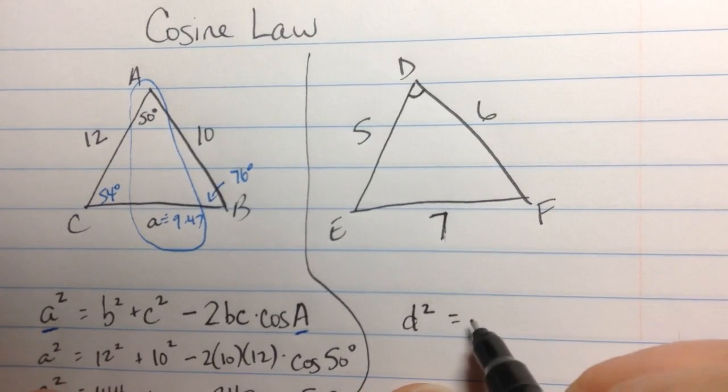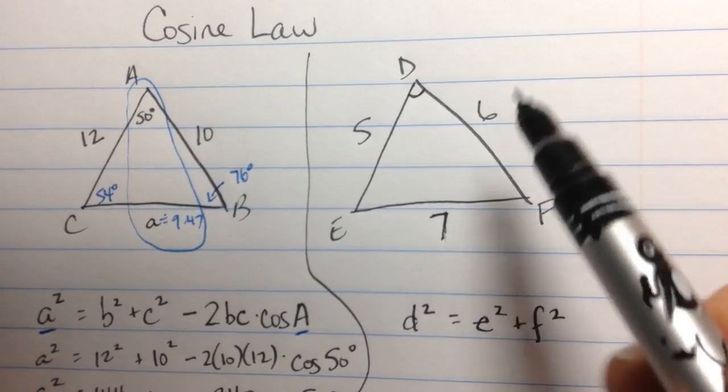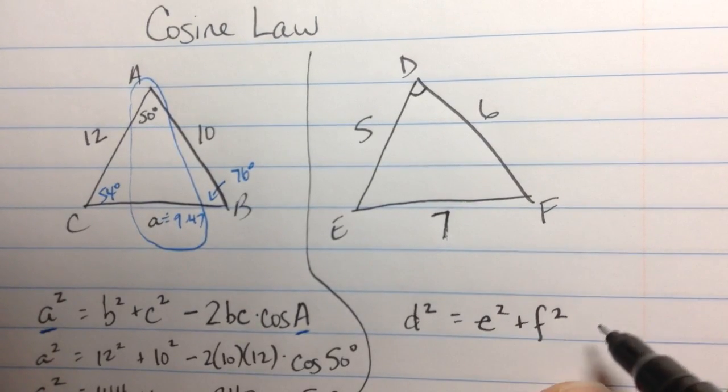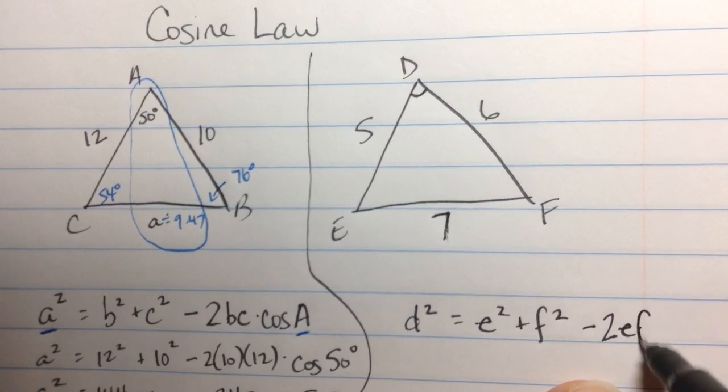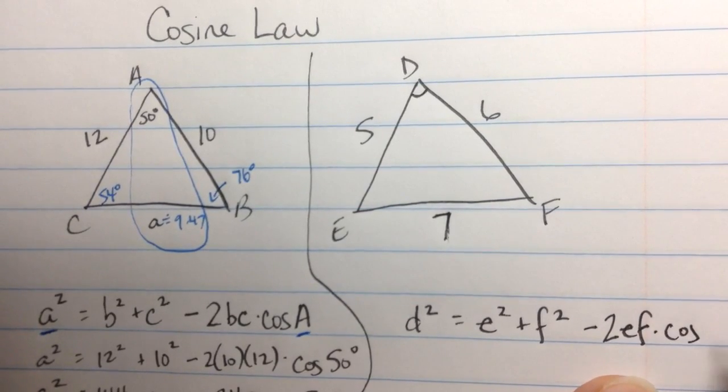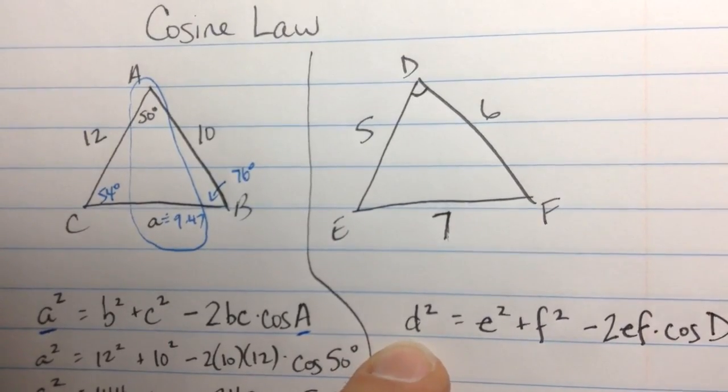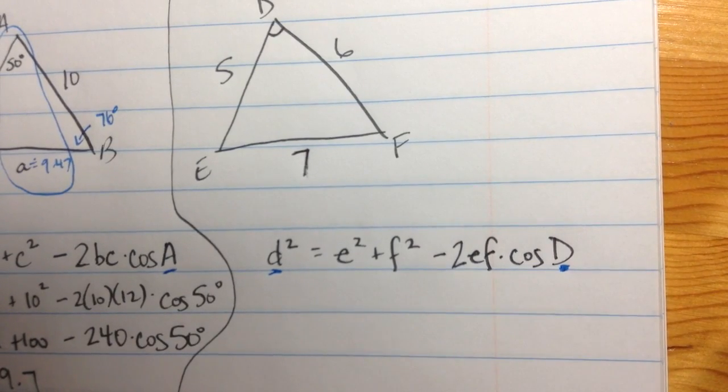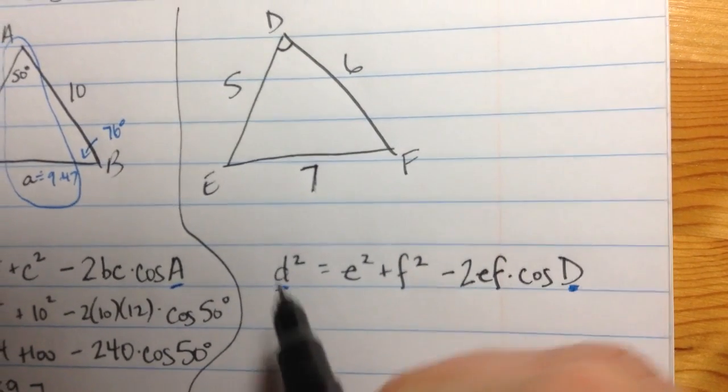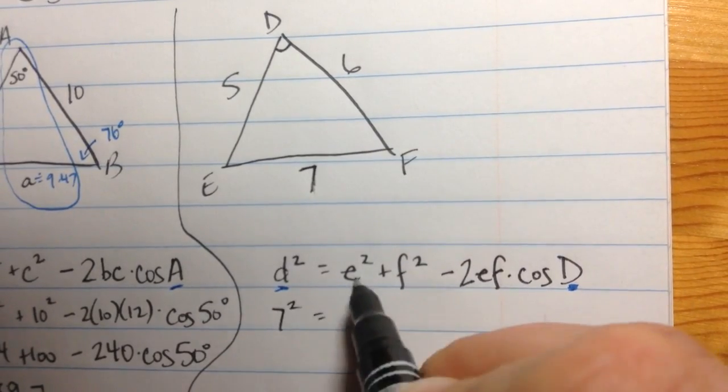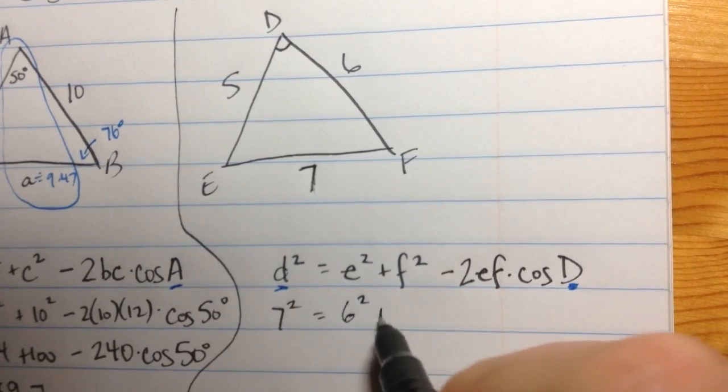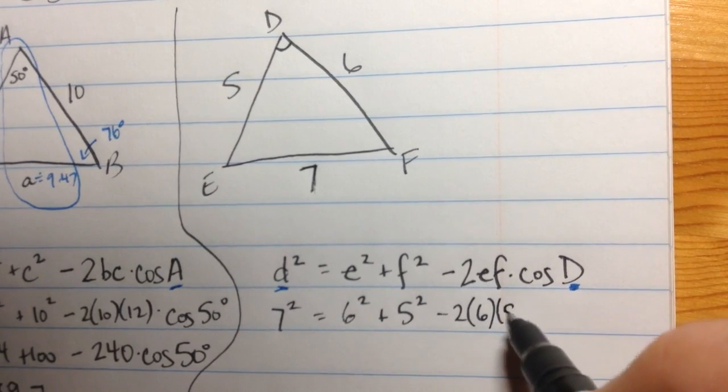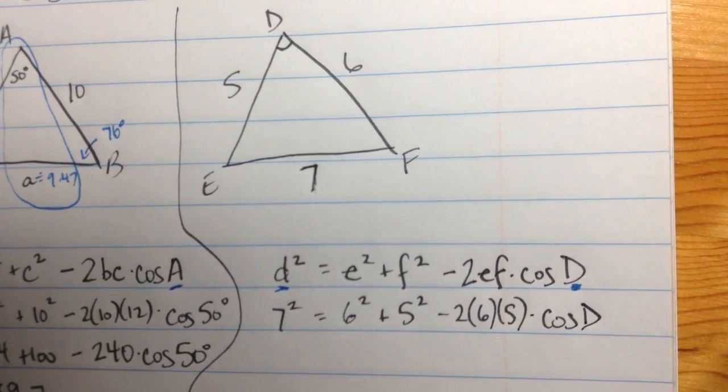So our equation will look like this. d² = e² + f². Those are the two other sides. So that's the 6 and the 5. That looks like Pythagorean Theorem, minus the adjustment 2ef times the cosine of the angle D, the one we're looking for. Notice again, these things match, and the E and the F are the other two sides. We fill stuff in. Little d is 7, little e is 6, little f is 5. Minus 2 times 6 times 5, times the cosine of D. That's our unknown.